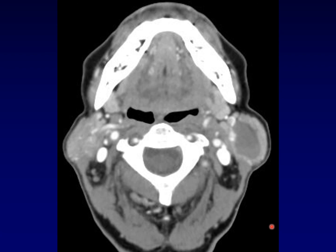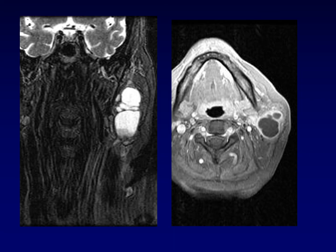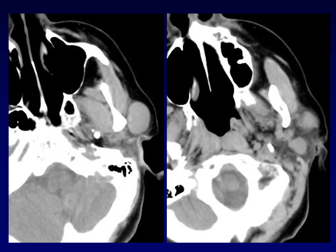Here is an example of a Warthin's tumor within the superficial lobe of the left parotid. Notice that it is essentially non-enhancing, reflective of that cystic degeneration. Here's another Warthin's tumor that has become superinfected — you can see not only an enhancing rim but also edema in the surrounding tissues. On T2-weighted images it appears bright but not as bright as CSF, because it is cystic in nature. Here's an example of a Warthin's tumor demonstrating multifocality, with three lesions in the superficial lobe.